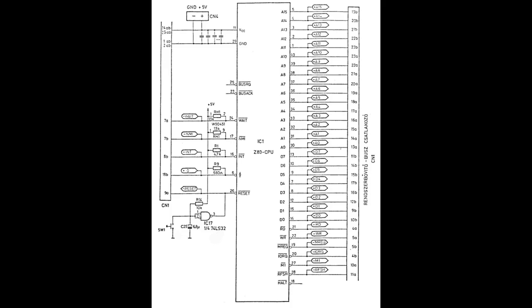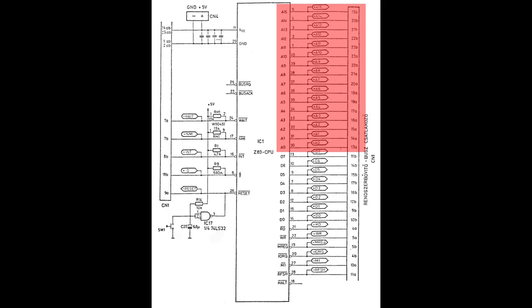First of all, what we need to get the Z80 moving — we need to feed it, so we need 5 volts and ground. Additionally, as I mentioned, there is a clock signal. The second group is the address bus, which goes from A0 to A15, meaning it is 16 bits wide. That way, the Z80 can address 64 kilobytes.